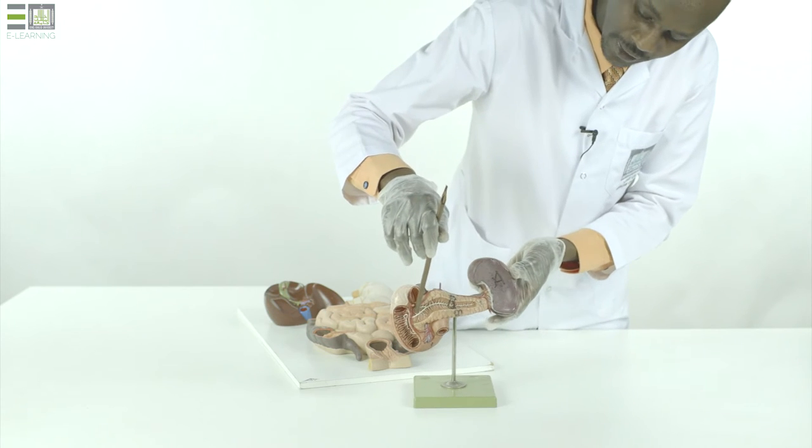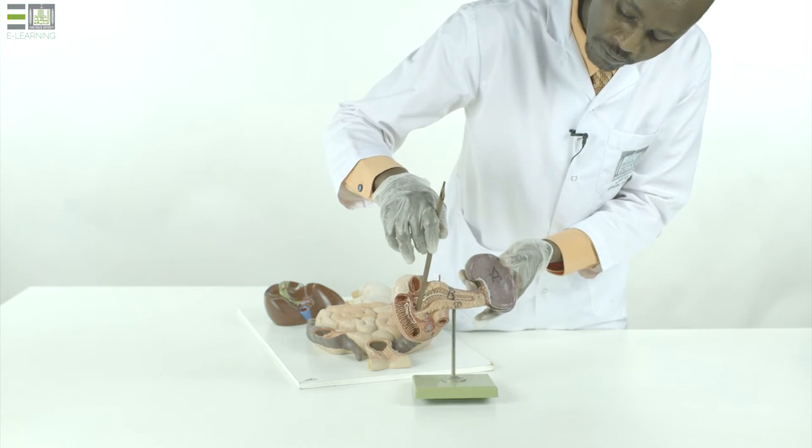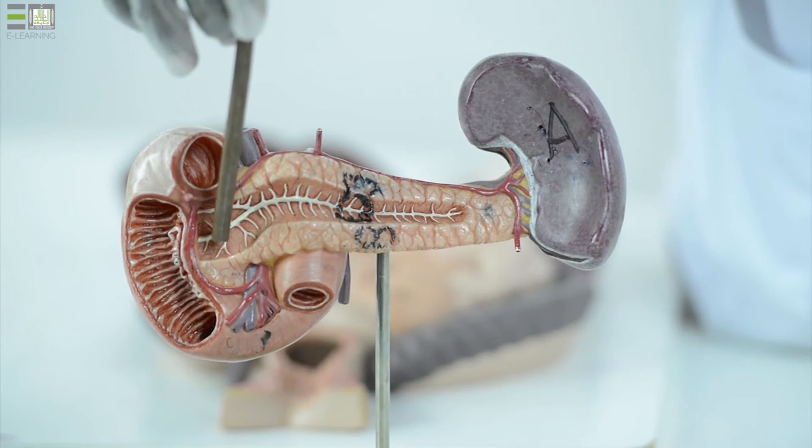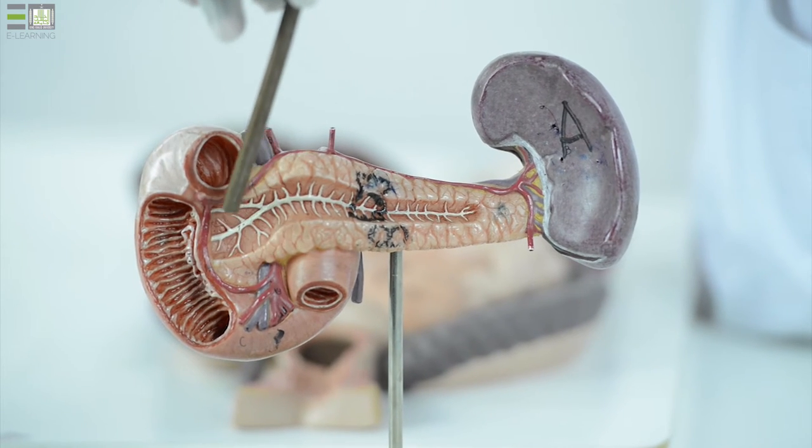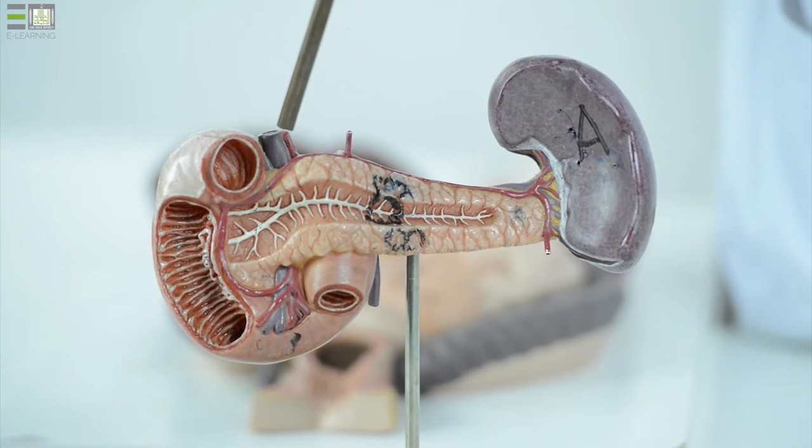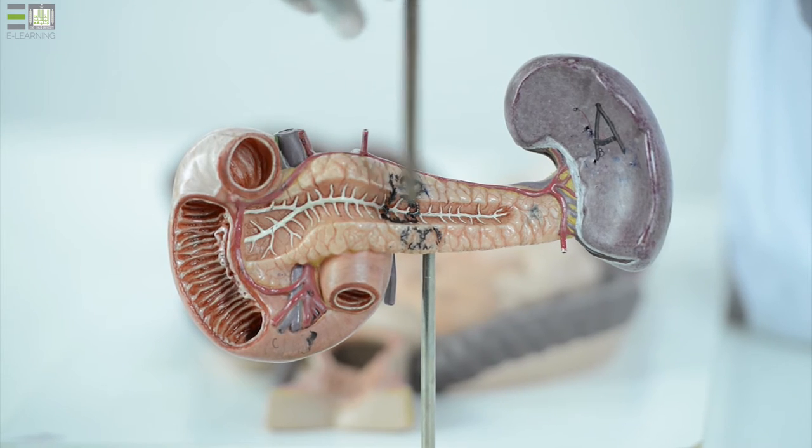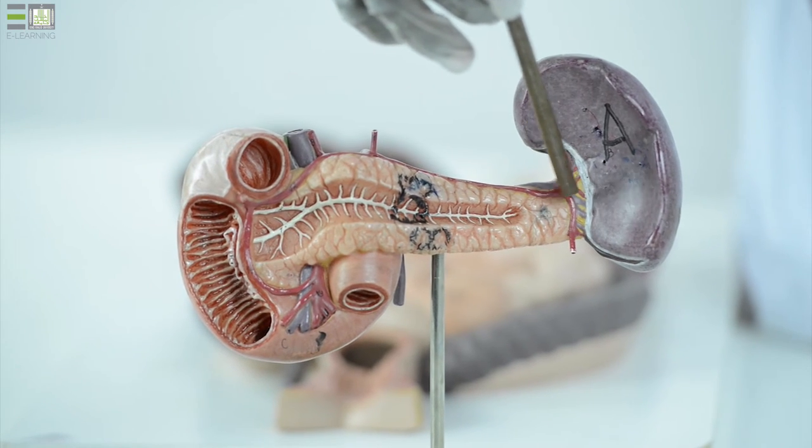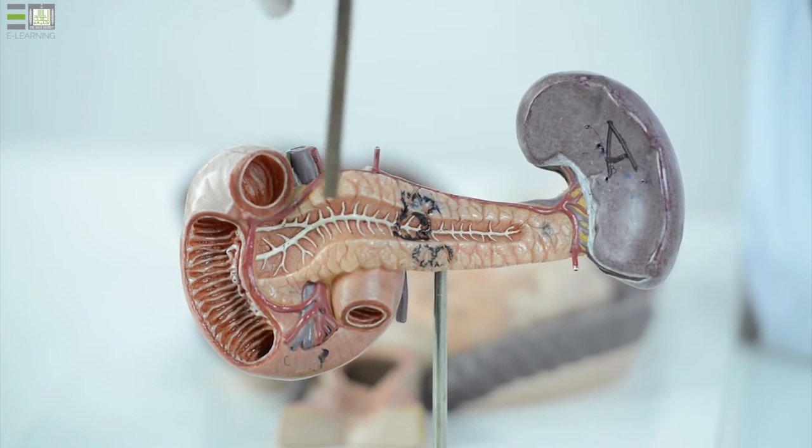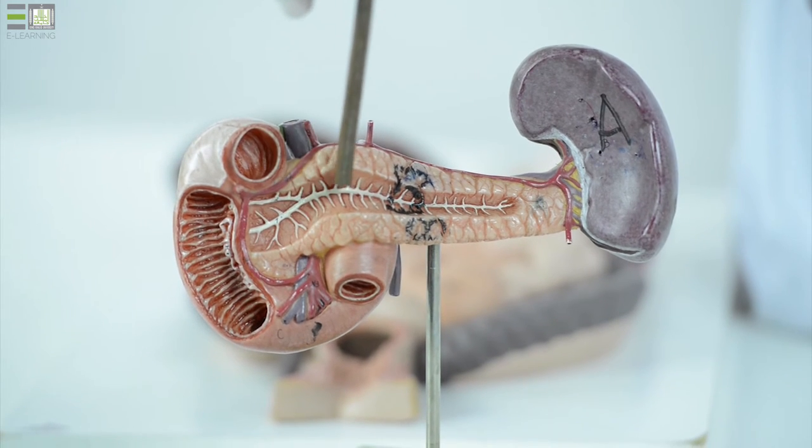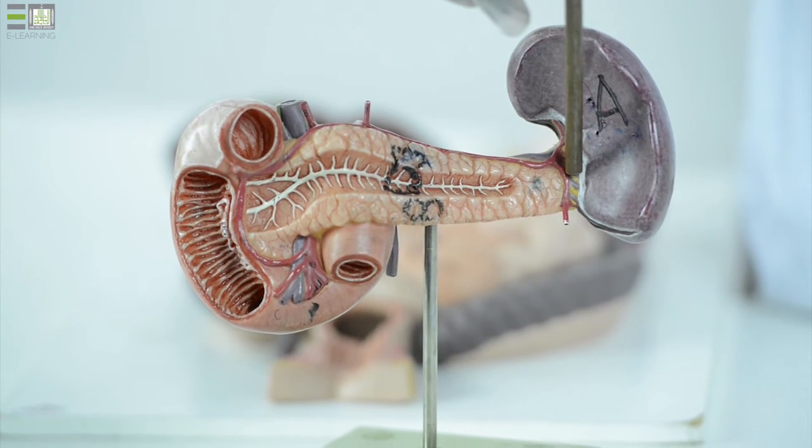The pancreas, which lies in the concavity of the second part, the concavity of the duodenum, extends from here to the hilum of the spleen. The pancreas is subdivided into four parts: head, neck, body, and tail.